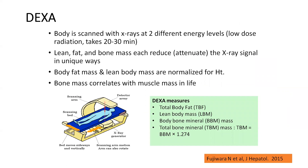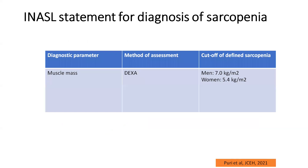Then comes DEXA — dual X-ray absorptiometry — where the patient is exposed to X-rays from different angles to calculate total muscle mass, lean body mass, and also bone mineral density, which helps assess osteopenia or osteoporosis in addition to sarcopenia diagnosis. The DEXA-based muscle mass cutoffs per Indian guidelines are 7 for men and 5.4 for women.